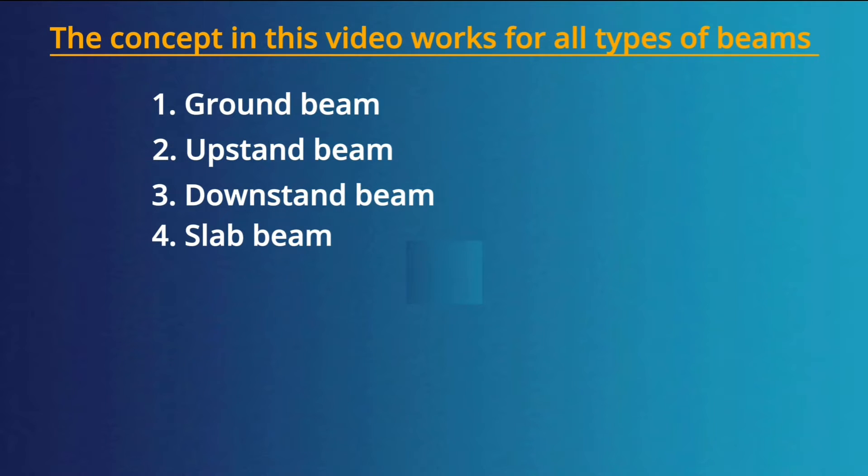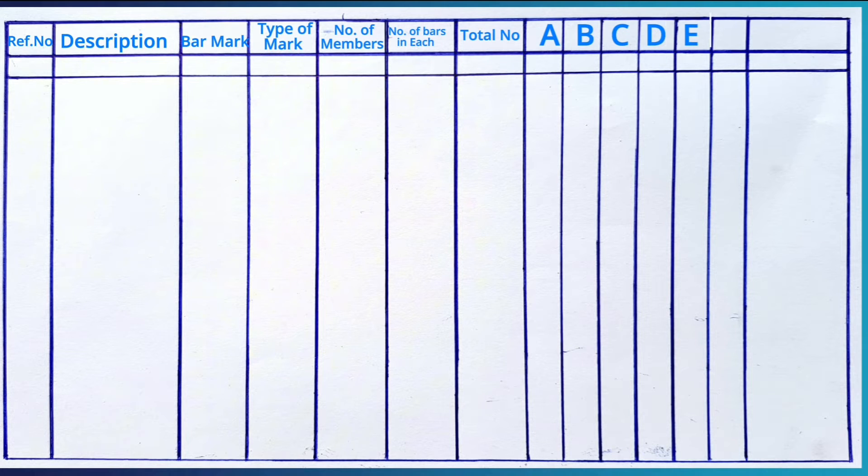When determining the number of steel bars required for your project, we use a bar bending schedule which has the reference number, description, bar mark, type of mark, number of members, number of bars in each, and the total number of steel bars — with the sides of the steel bar as side A, B, C, D, E, and F — and the total cutting length of the steel bar.